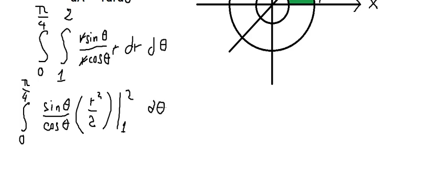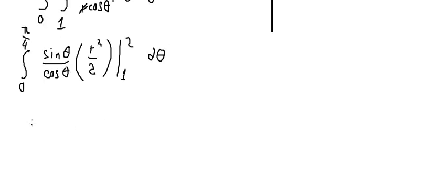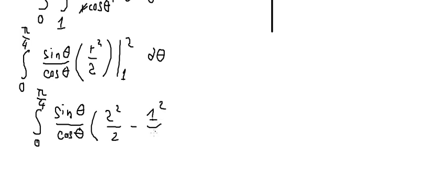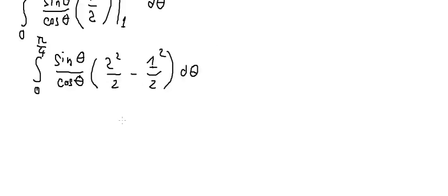So we put 2 in here, and 1 in here. So we have 2 squared over 2, minus 1 squared over 2. We get 3 over 2.